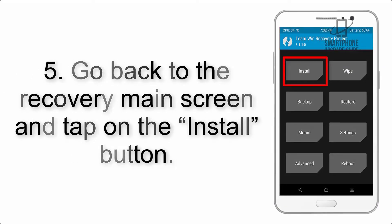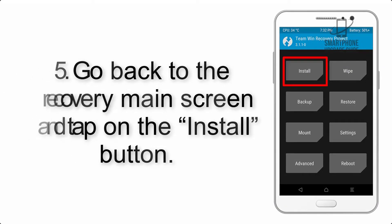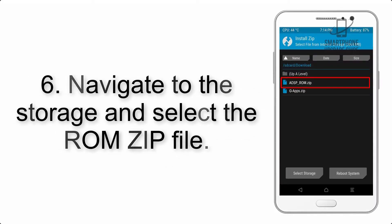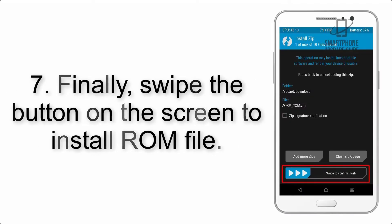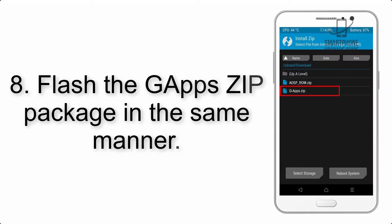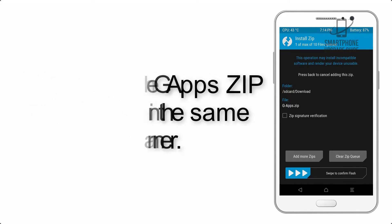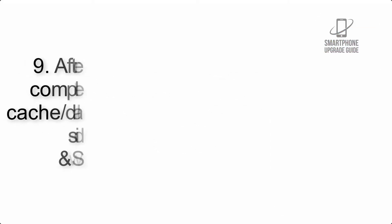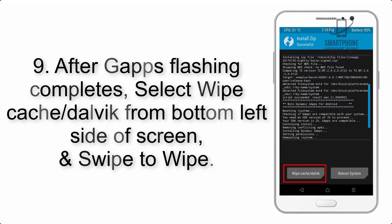Step 5: Go back to the recovery main screen and tap on the Install button. Step 6: Navigate to the storage and select the ROM zip file. Step 7: Swipe the button on the screen to install the ROM file. Step 8: Flash the GApps zip package in the same manner.